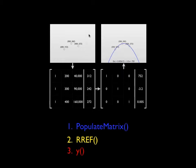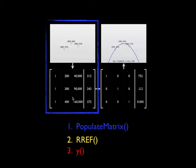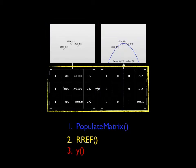There's basically three parts to this. Populate matrix takes the set of points and creates an augmented matrix out of them. RREF takes that augmented matrix and transforms it into reduced row echelon form.